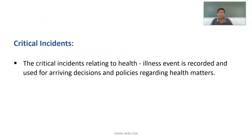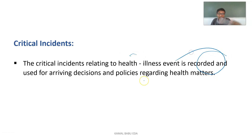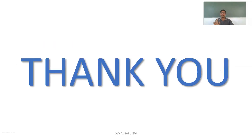Critical incidents are events related to health and illness. These events are recorded and used for arriving at decisions on diseases and health policies. For example, in a hospital, recorded data on long-term diseases or previous disasters can be gathered to make quick decisions based on already available records. This concludes the discussion on primary methods of data collection. In the next class, we will discuss secondary data collection and its advantages and uses. Please like, share, and subscribe, and drop any queries in the comment box.